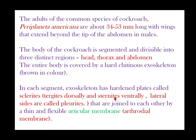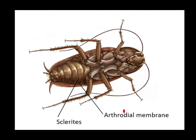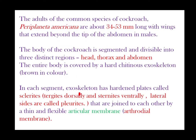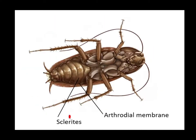The dorsal part is called tergite and the ventral part is called sternite. The lateral sides are called pleurites. These sclerites are joined to each other by a thin flexible articular membrane called arthrodial membrane. This plate is called a sclerite and this membrane is called the arthrodial membrane.